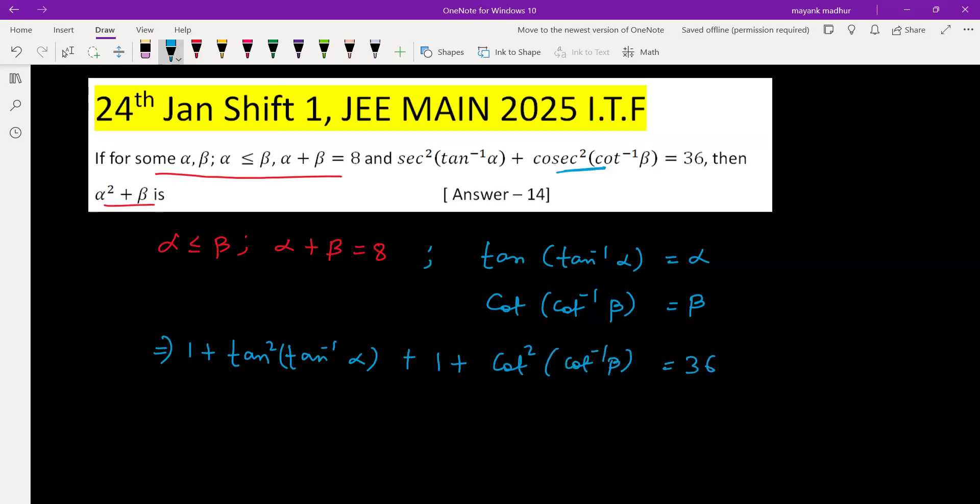We have been given this value as 36. The square here means the whole expression squared. So tan(tan⁻¹ α) = α, giving us 1 + α². Similarly, 1 + β² = 36. Therefore, α² + β² = 34. This clearly looks like 3² + 5² = 34.